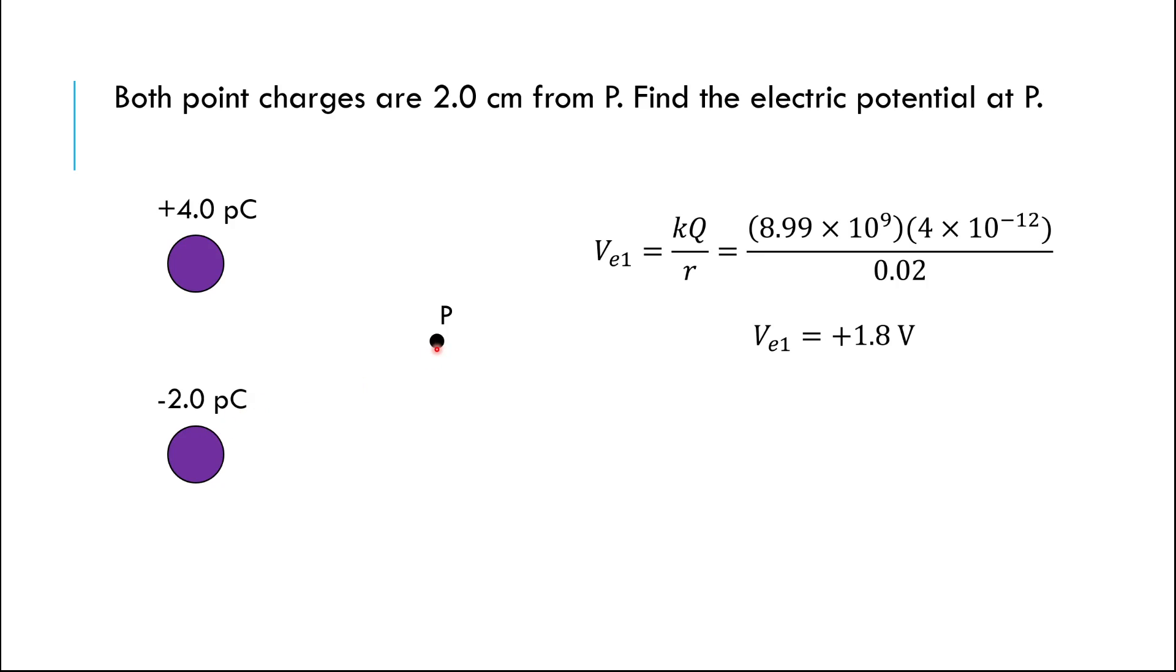I need to also consider the potential from the negative two picocoulomb charge. Same process. I'll get this. Negative 0.9 V. And if I want the total potential, it's very easy because potential is a scalar. So don't let the electric field practice get too in the way. You don't need to draw arrows or nothing. You just add them up. I got a positive and a negative. They're going to add to positive 0.9 V. That's the potential at P. You'll see lots of different arrangements of charges and things like this. Find the total potential. And that's all you do. Find the potential from each individual point charge and add them together. Keep in mind, depends on how far away they are. The magnitude of each charge and plus and minus for these scalars especially is really important. Just make sure you keep track of that.